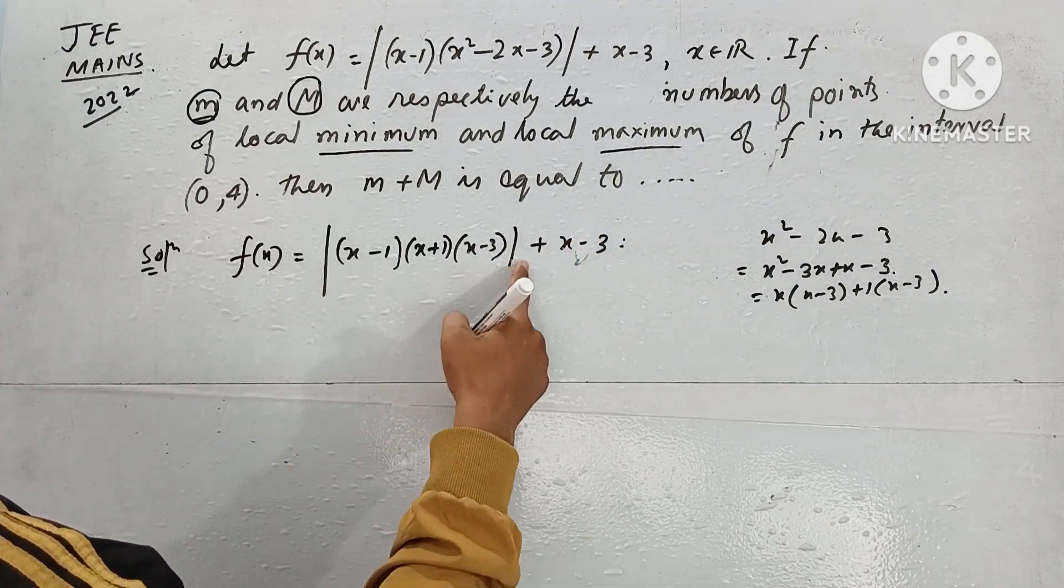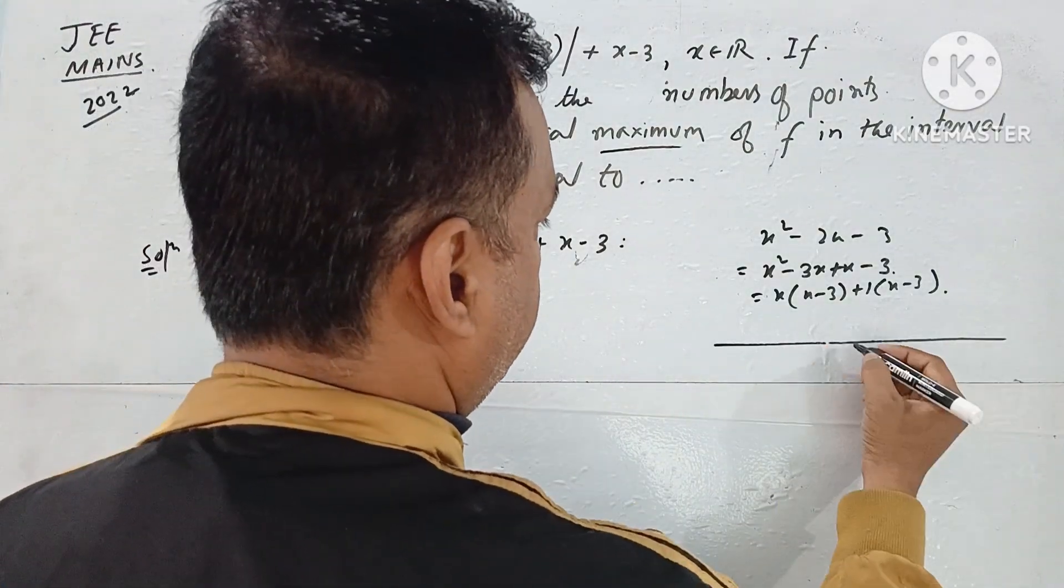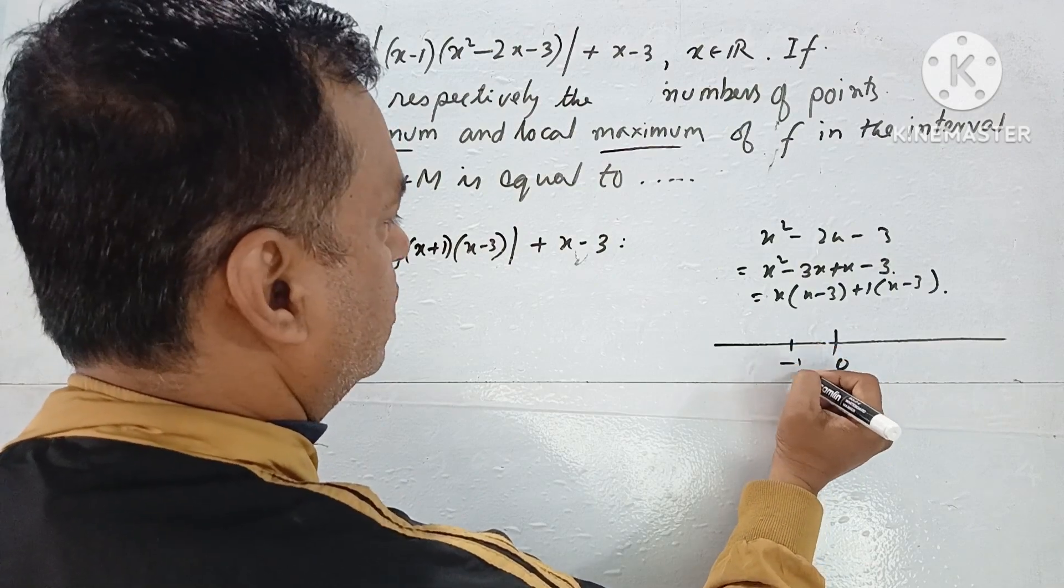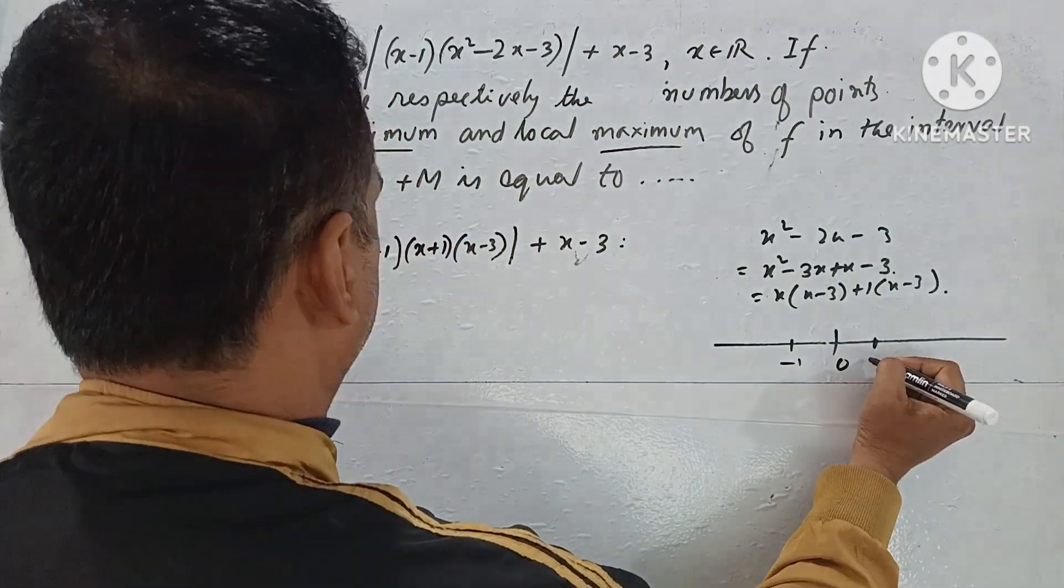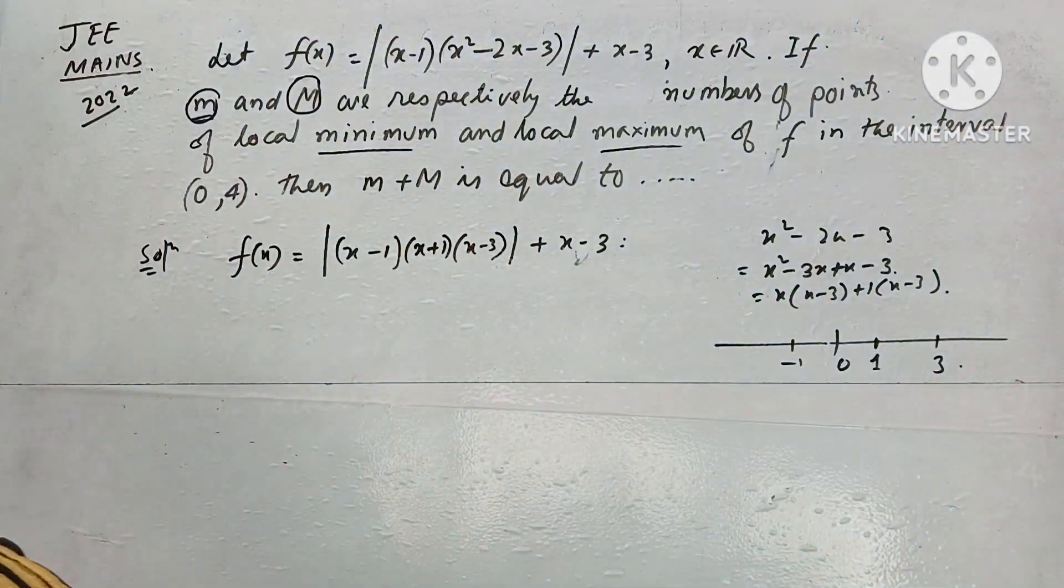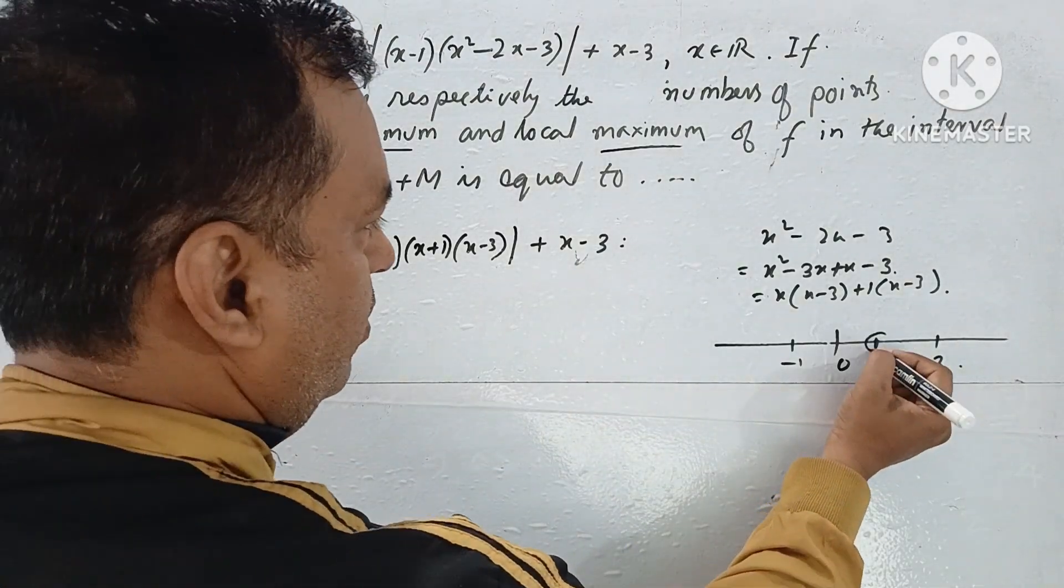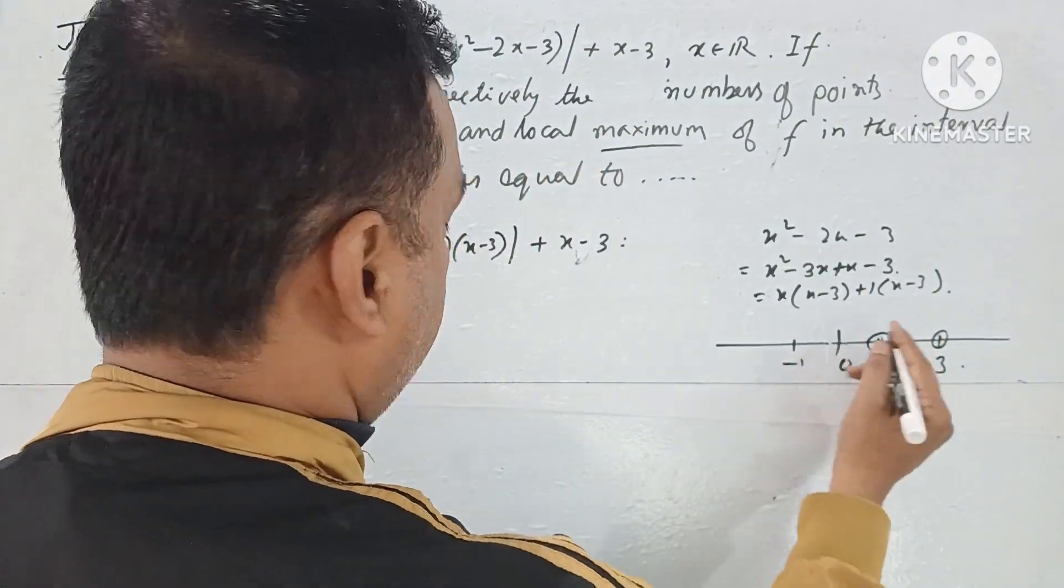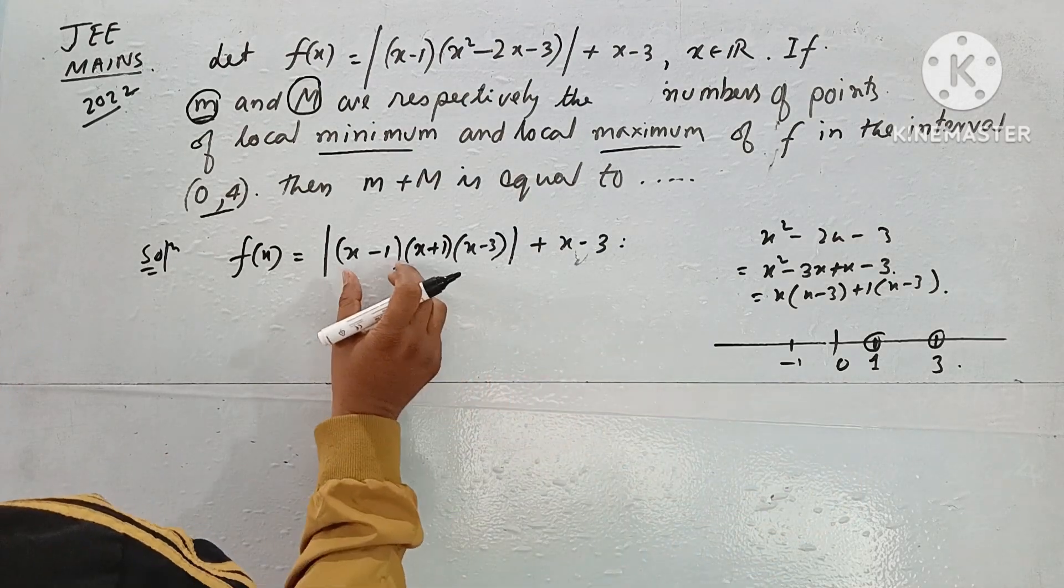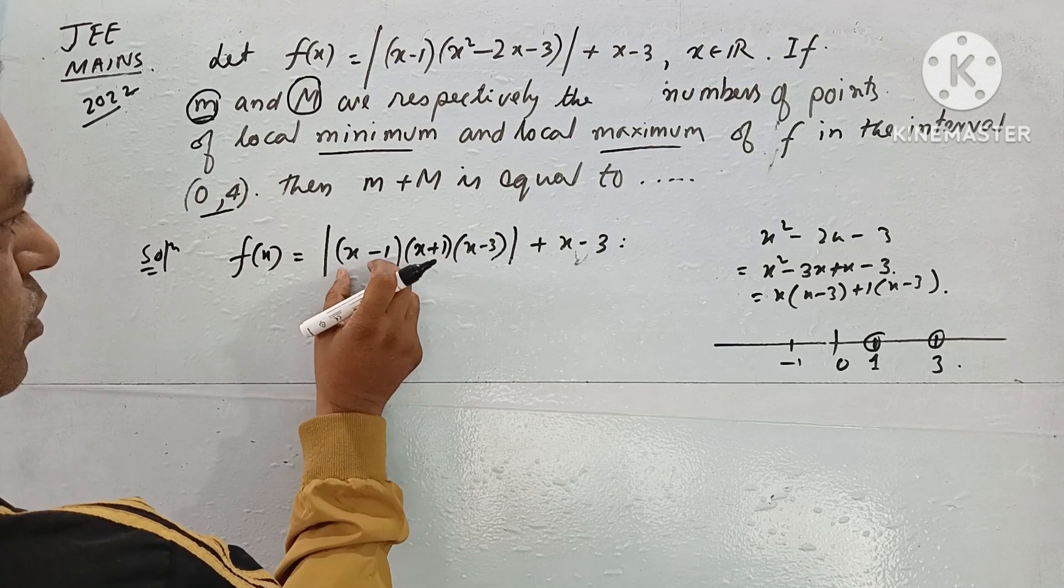Now for this part, we'll see. We mark the critical points: 0, -1, 1, 3. These are the points where the function equals zero. Now for x in (0,1), this is negative, this is negative, this is positive, so this function is positive.